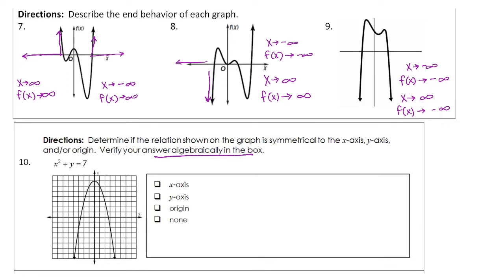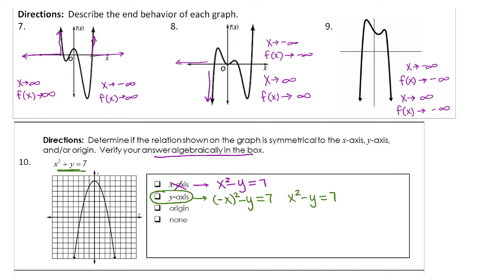To be symmetric about the x-axis, we substitute in a negative y value, giving us x squared minus y equals 7. That does not match what we started with, so it is definitely not symmetric about the x-axis. For the y-axis, we substitute in a negative x. When we square negative x, it becomes positive x squared minus y equals 7, which is indeed what we started with — so we are symmetric about the y-axis.